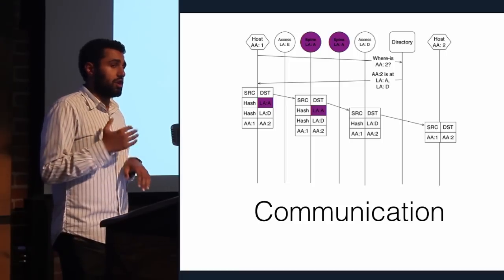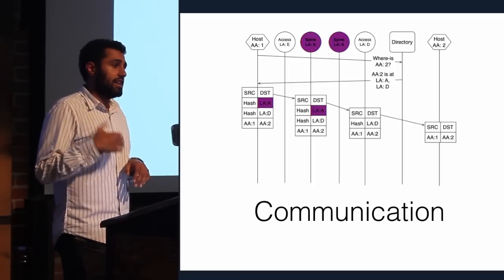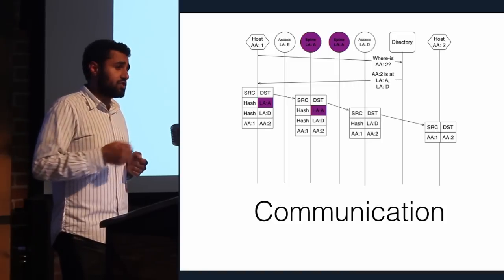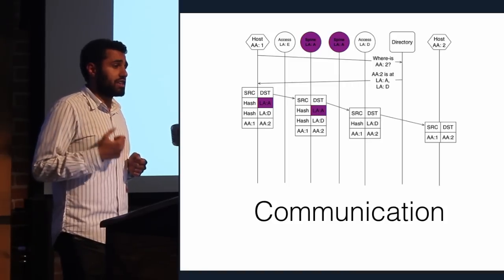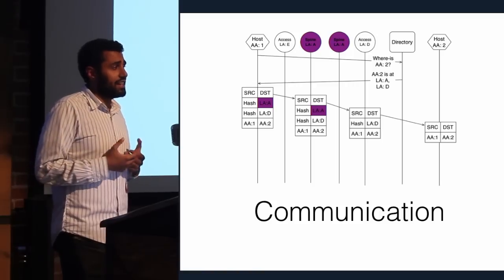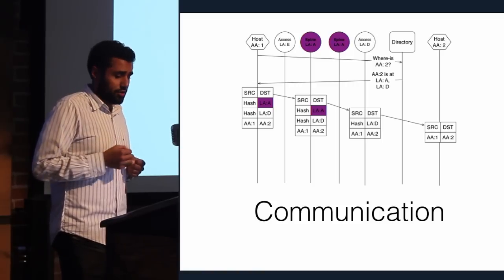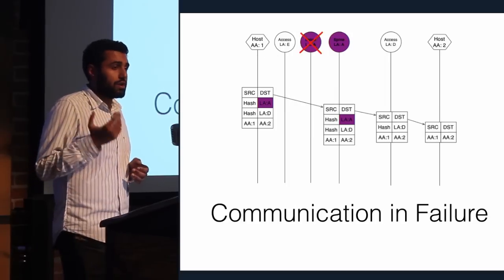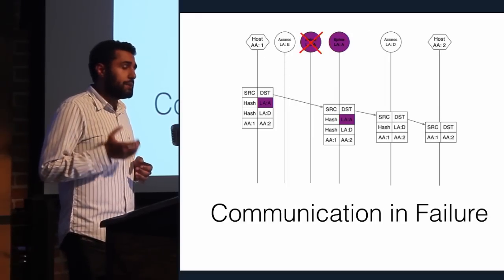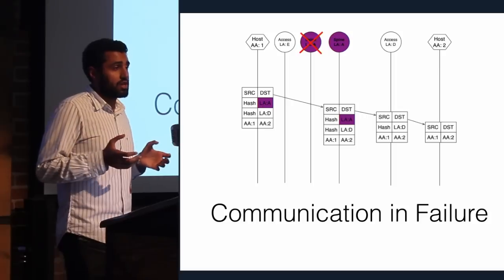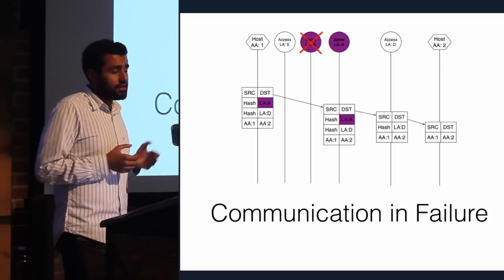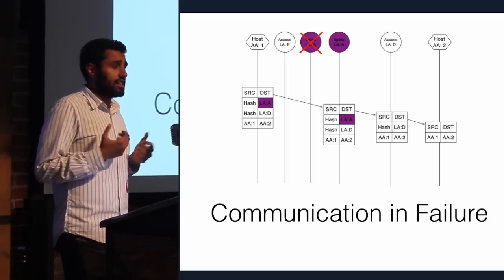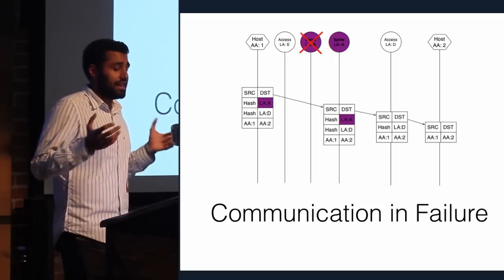The first label put on the packet is the penultimate hop, and the top label is the spine hop. As the packet traverses the network, it is de-encapsulated until it gets to the penultimate hop, at which point it's the actual packet itself. In case of failure, ECMP and anycast come in — because pods of spines have anycast addresses, OSPF reconvergence kicks in and redirects traffic to the other spine in that pod.